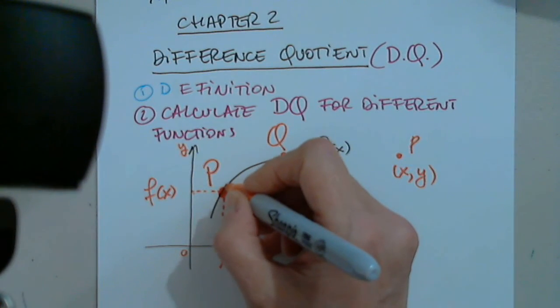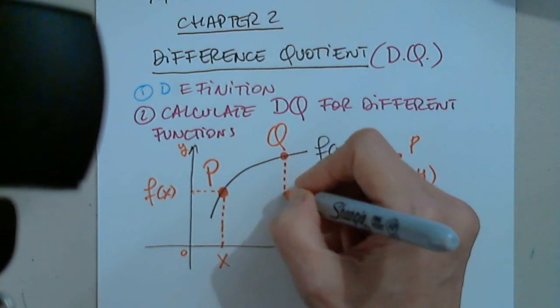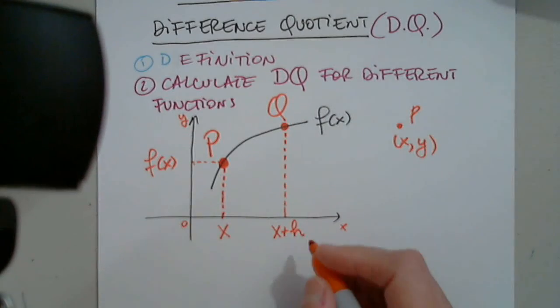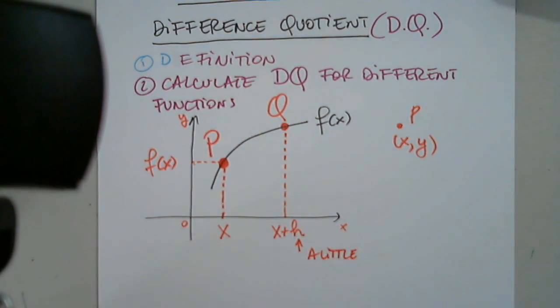Let's assume that Q is very, very close here. So I'm going to say that its x coordinate is x plus a little bit. The little bit is denoted by h. Yeah, I have to change. I'm going to stop the video. Sorry.